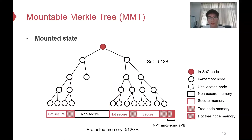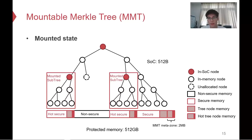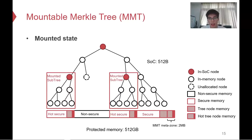As for the mounting mechanism, if a subchain is hot, the memory controller will mount the subchain root in SoC, so the integrity check will be finished when arriving at the subchain root. The mounting mechanism is used to accelerate the memory integrity check due to memory access locality.